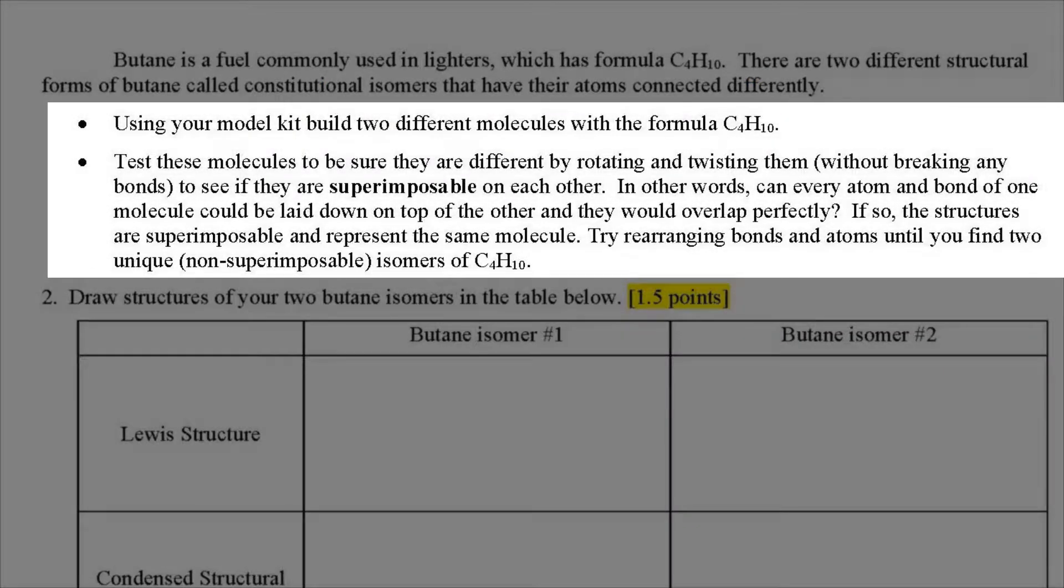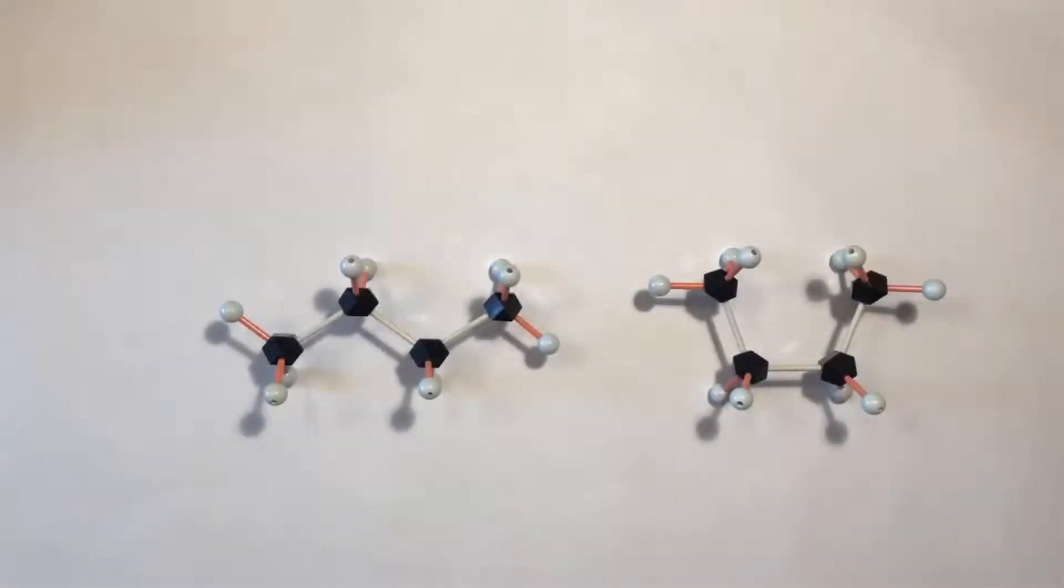Use your model kit to build two different models of C4H10 that have different connectivities. Then you'll want to test your two structures to make sure that they're actually different. We're going to test to see if they're superimposable. I have a demonstration here to explain how that works.